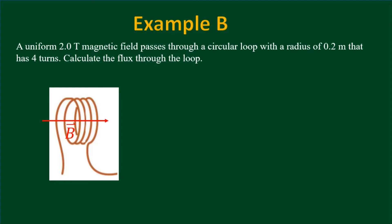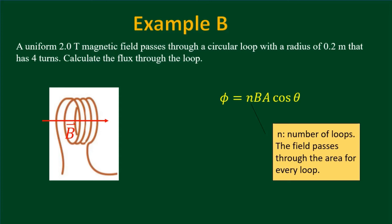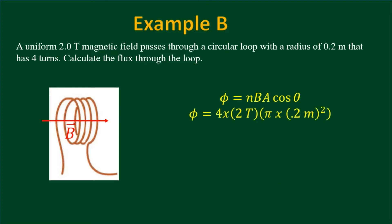Example B: A uniform 2-tesla magnetic field passes through a circular loop with a radius of 0.2 meters that has four turns. Calculate the flux through the loop. Since there are four loops, there are four areas for the flux to pass through. The revised formula includes n (the number of loops), so Φ = nBA = 4 × 2 × π(0.2)². The answer is approximately 1.005 Webers, or about 1 Weber to two significant figures.